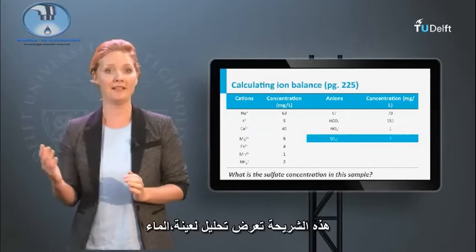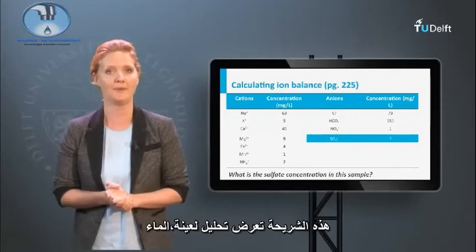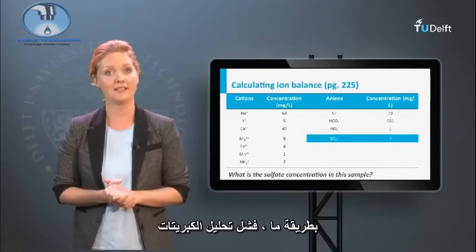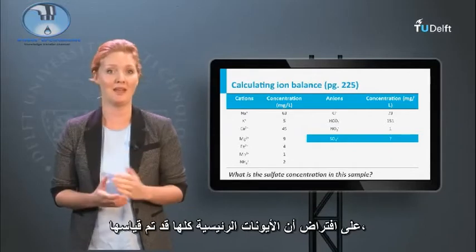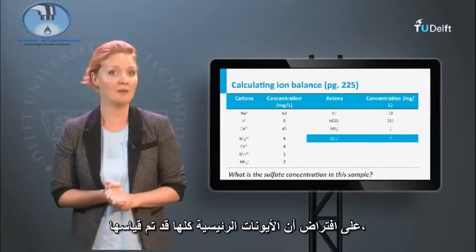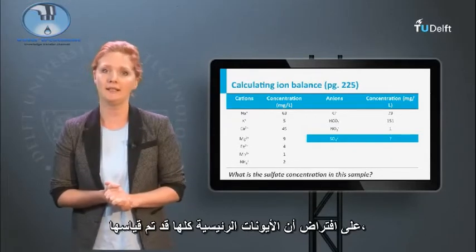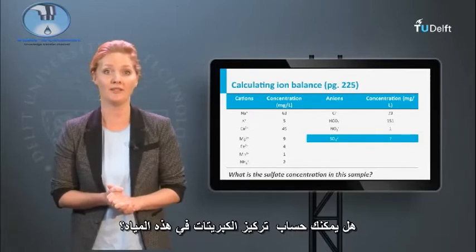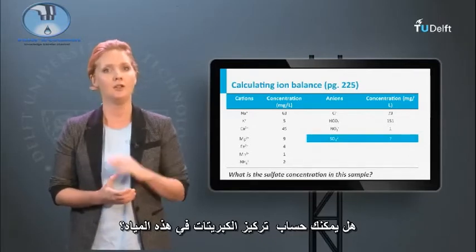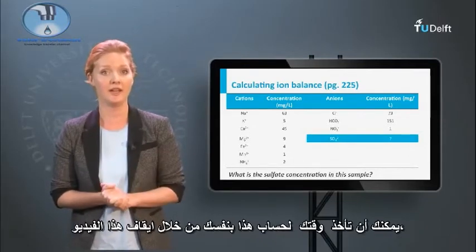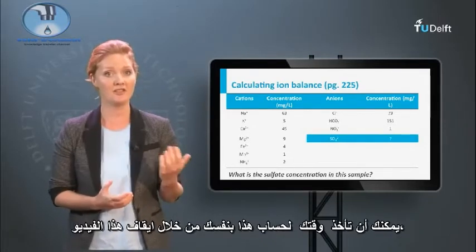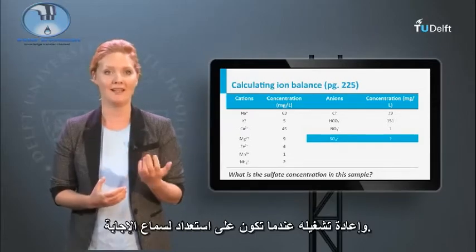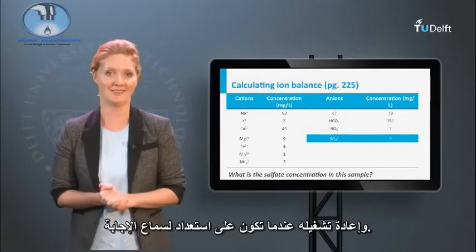This slide depicts the water composition of a sample. However, the sulfate analysis failed. Assuming that the major ions have all been measured, can you calculate what the sulfate concentration in this water is? You can take the time to calculate this for yourself now by pausing this video. Restart it again when you are ready to hear the answer.